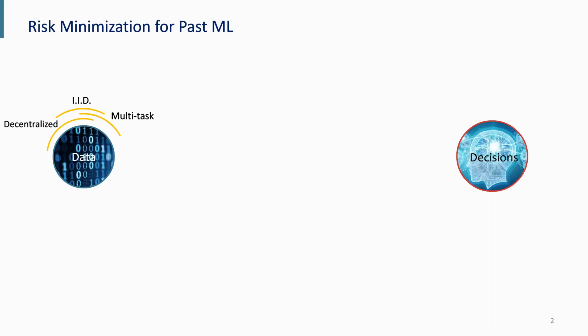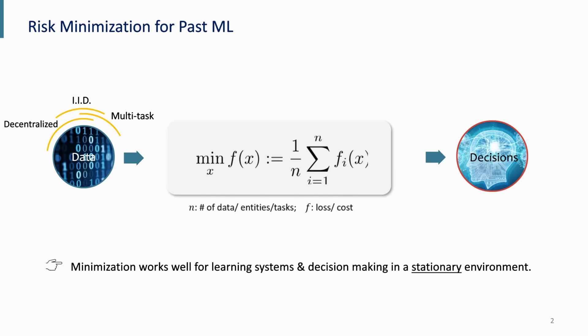In the past we have seen a lot of success of machine learning — it has done very well on stationary data like images and texts. Even when data is somehow missing, decentralized rather than centralized, or coming from multiple domains or multiple tasks, we can cast these problems as a risk minimization problem, which is a common approach where we try to minimize the collective risk over all the data we have seen.